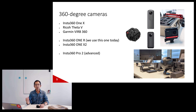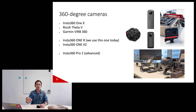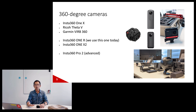In the earlier days we used the One X, the Ricoh Theta V, or the Garmin VIRB — those three on the upper left. The Insta360 One R and One X2 are very popular consumer-level cameras designed for most everyday scenarios. There are also larger professional cameras such as the Insta360 Pro 2 — as the name suggests it's an advanced camera. You can see in the picture it's much bigger: a large metal ball compared to the smaller consumer models.